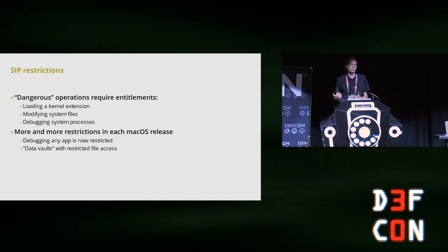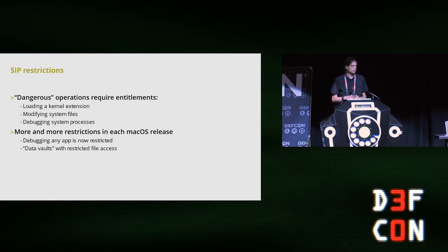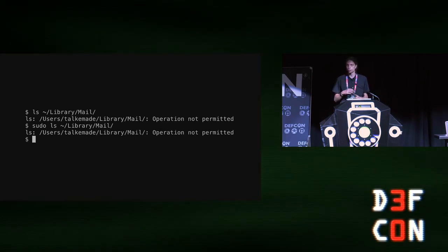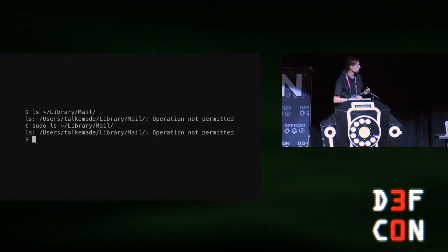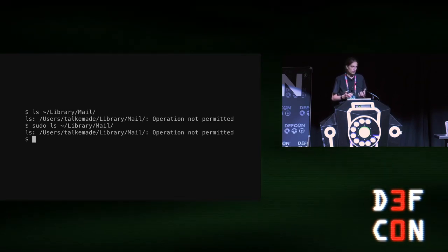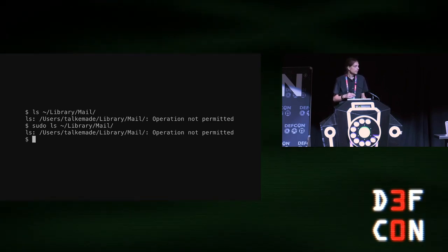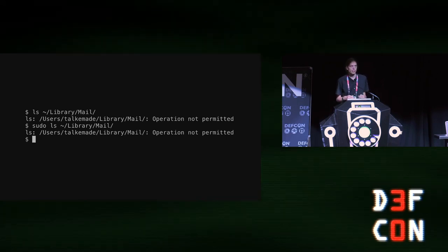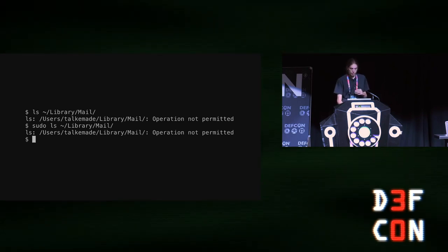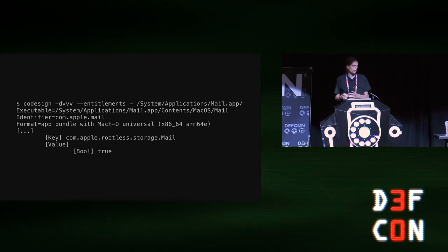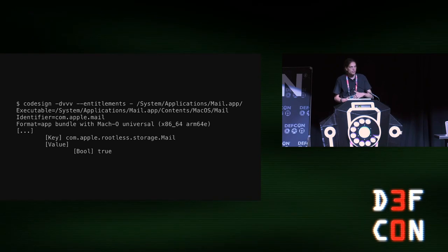There's also a feature called data vaults. Apple considers your email database, iChat history, and Safari browsing history very sensitive, so Apple doesn't want any process to be able to read that. This data is placed into what's known as a data vault — you cannot list the contents of the directory, and even with sudo you cannot access it. Only processes with a special entitlement are allowed access. For example, your mail client has the entitlement com.apple.rootless.storage.mail, which gives it access to the mail data vault. Mail can access those files, but any other process cannot.